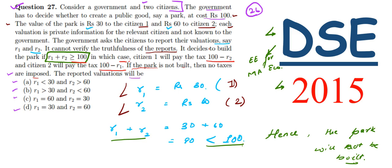But if the citizens report false values and decrease the amounts - let this 30 be changed to 25 and let this 60 be changed to 50 - the summation will obviously decrease from 90, which will again be less than 100. So if they decrease the amount of valuation, the park still won't be built.